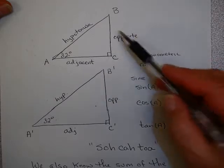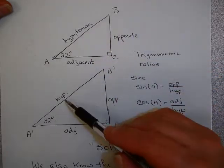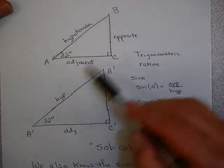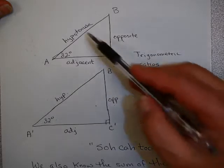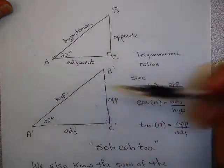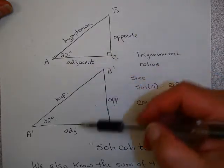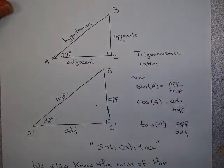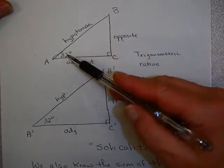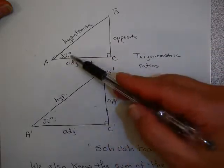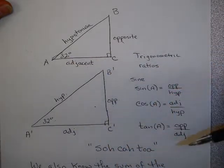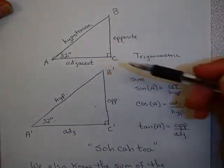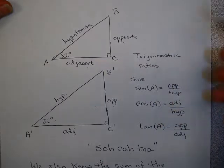And the ratio, therefore, of the corresponding sides — opposite over opposite, hypotenuse over hypotenuse, adjacent over adjacent — is always the same. If these two triangles are 32 and 90 degrees, that ratio is always going to be the same.